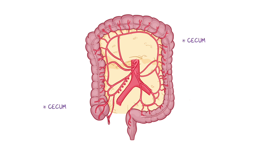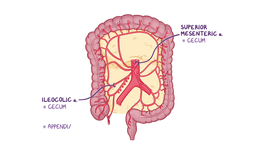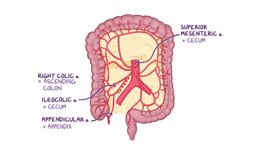The cecum is supplied by the superior mesenteric artery through its terminal branch called the ileocolic artery, and the appendix is supplied by the appendicular artery, which is a branch of the ileocolic artery. The ascending colon receives arterial blood from the branch of the SMA called the right colic artery, and also from the ileocolic artery, and these two arteries also anastomose with each other.